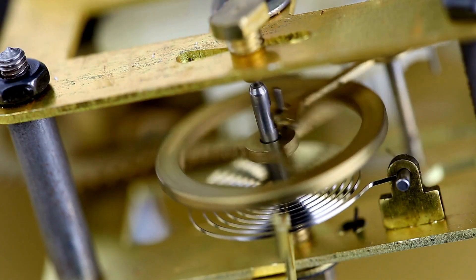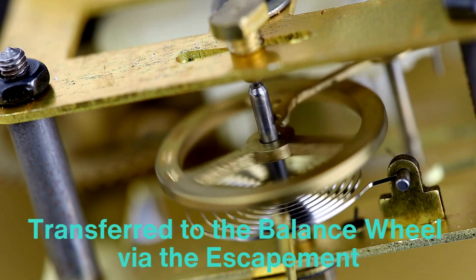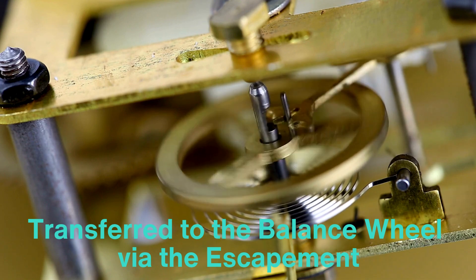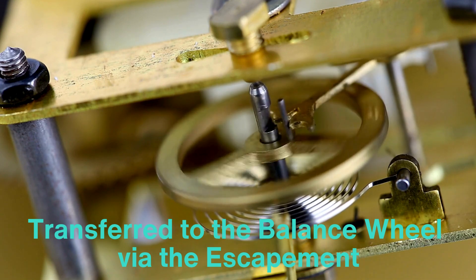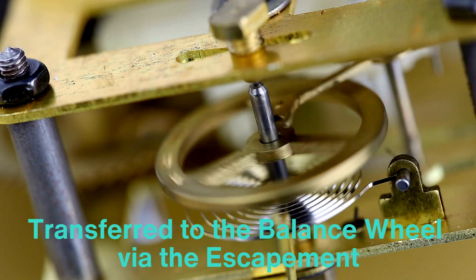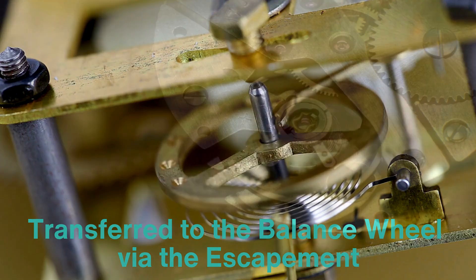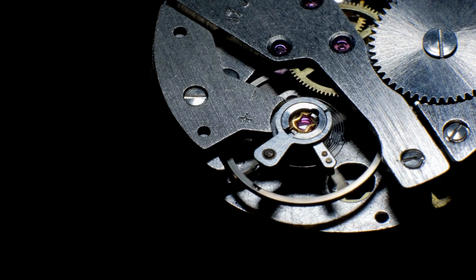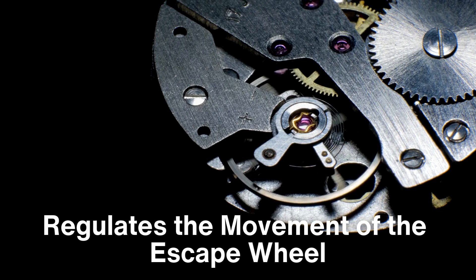When the mainspring releases energy into the gear train, some of it is transferred to the balance wheel via the escapement. The balance wheel oscillates, or swings, at a fixed frequency, determined by the tension in the hairspring. As the balance wheel swings back and forth, it interacts with the pallet fork, which in turn regulates the movement of the escape wheel.